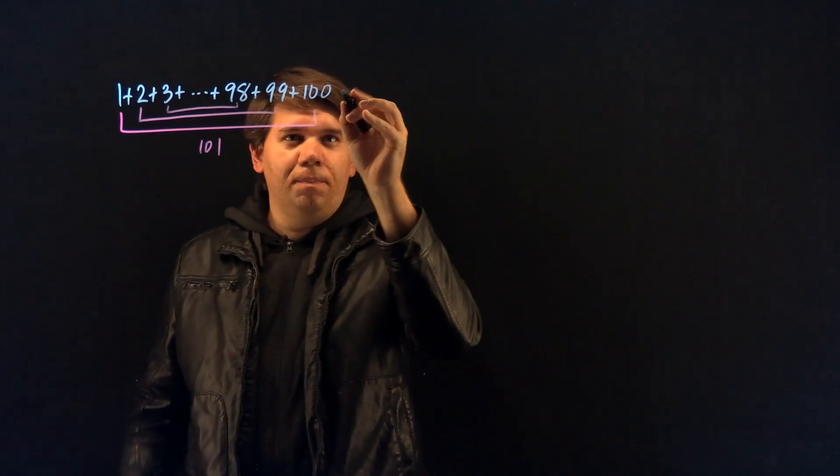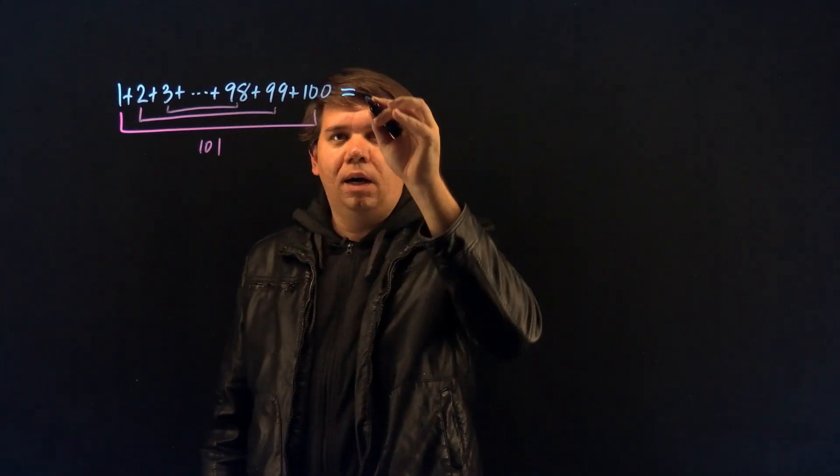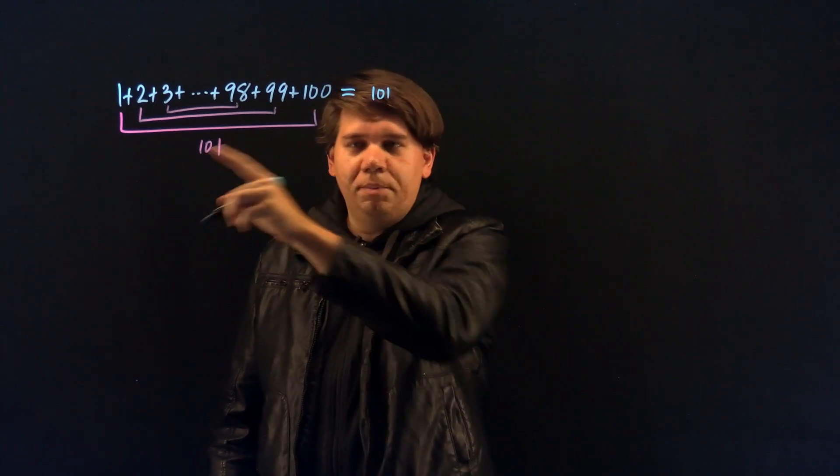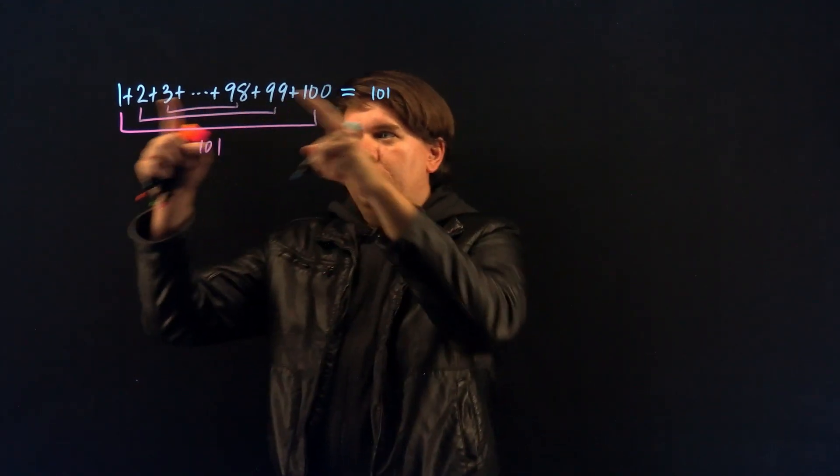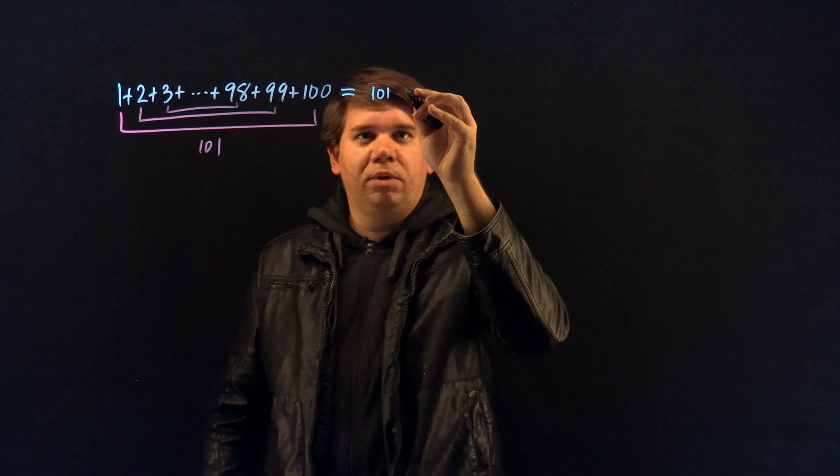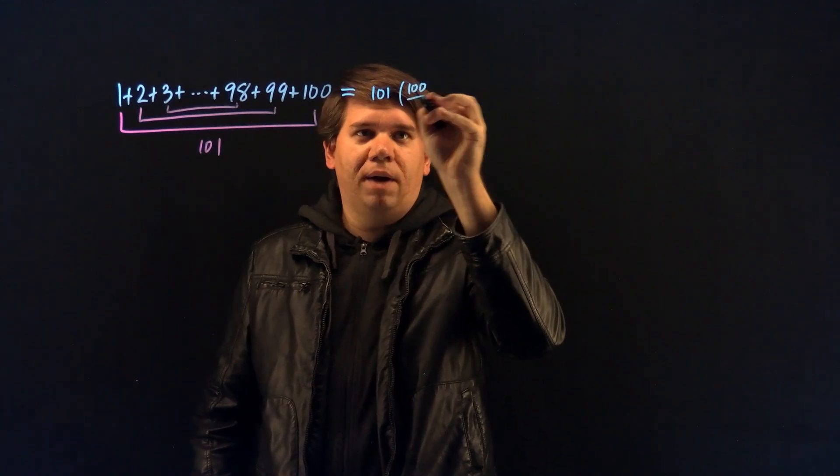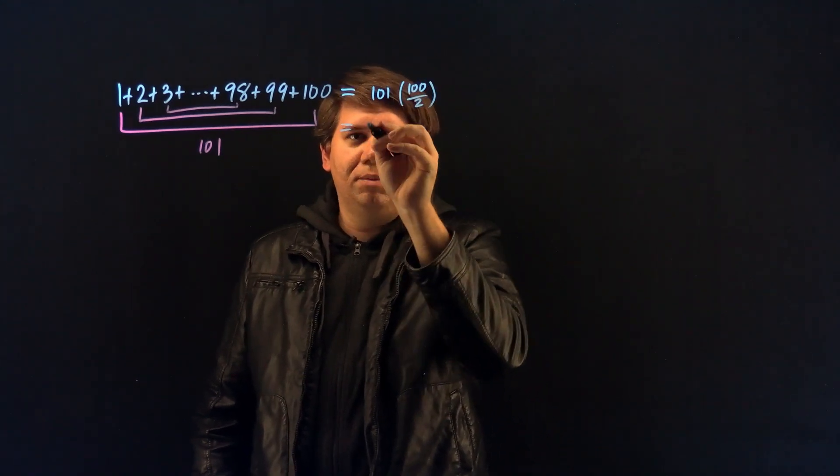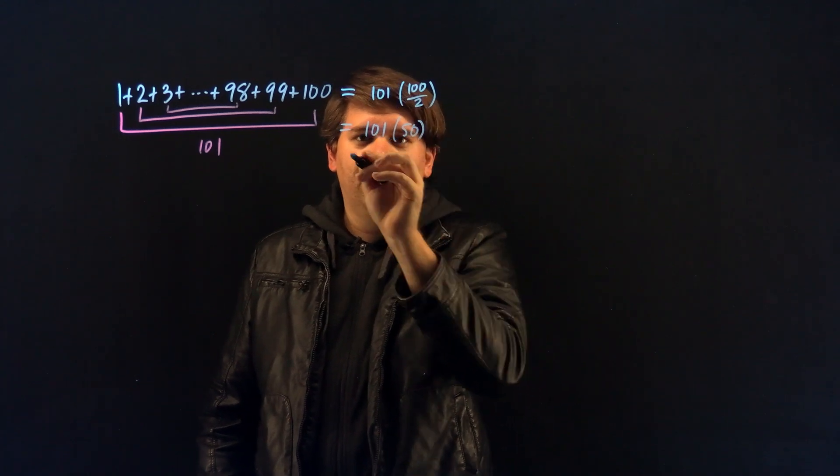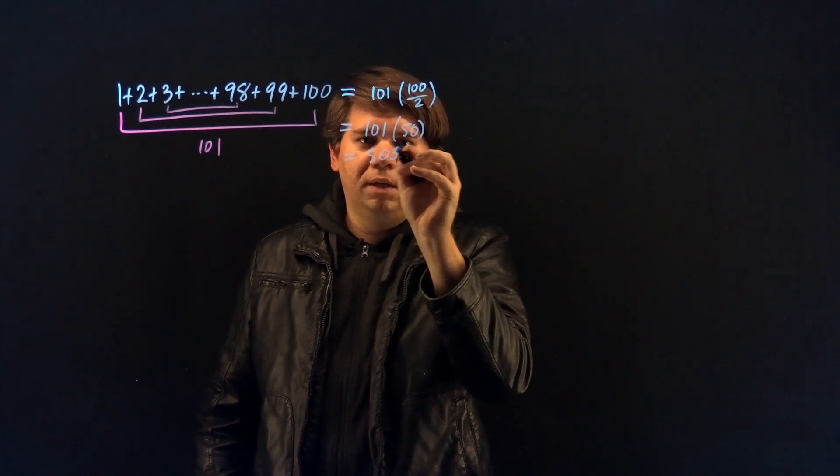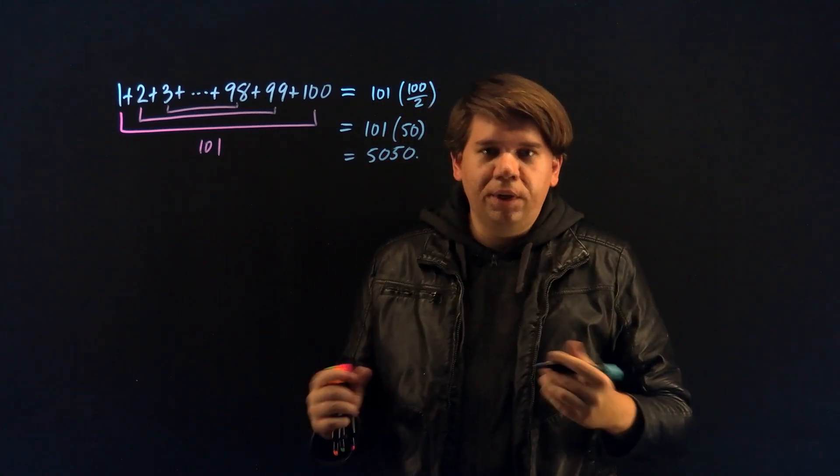Thus, the sum is just going to be 101 times the number of pairs. There's 100 numbers in total, and so the number of pairs is 100 divided by 2. So the sum just becomes 101 times 50, which is just 5,050. Pretty cool trick.